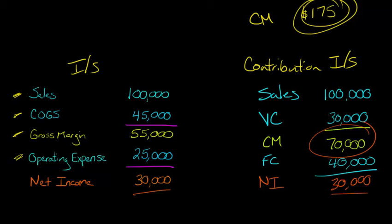And then this $70,000, we see, okay, well, the $40,000 of it goes toward covering the fixed costs, and then there's $30,000 of that contribution margin left over, and that's where our profit is.